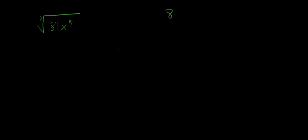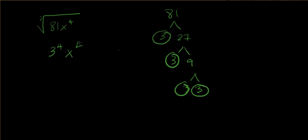And so let's go ahead and break that 81 apart, factor it up. So we have a 3 and a 27, and a 3 and a 9, and a 3 and a 3. So that is made up of 3 to the 4th, because we have 1, 2, 3, 4. Now we have x to the 4th.